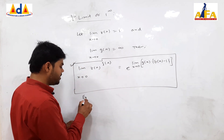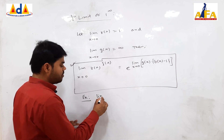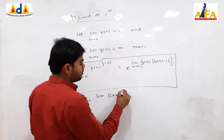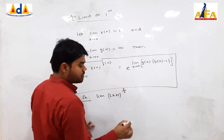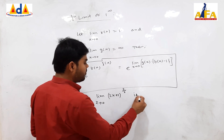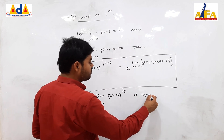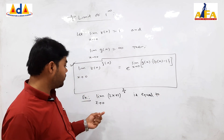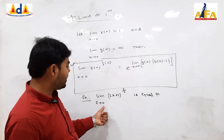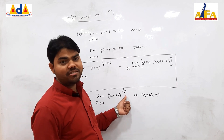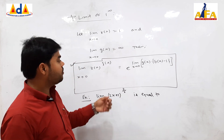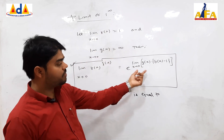For example, consider the first simple example. Let the limit of (2x + 1) to the power (3/x) as x tends to 0. We have to find its value. As x tends to 0, the base is 1 and the power is infinity. So it is of the form 1 to the power infinity.